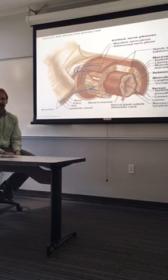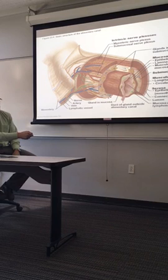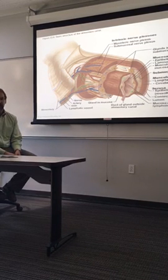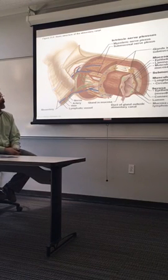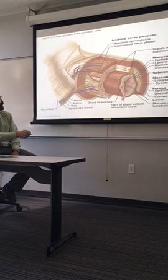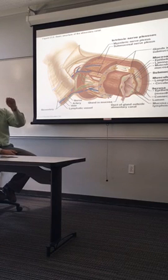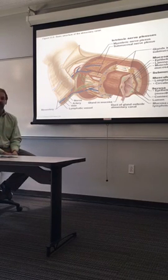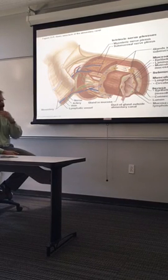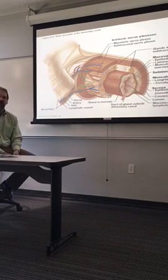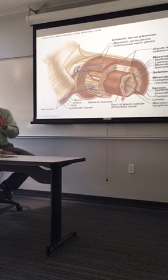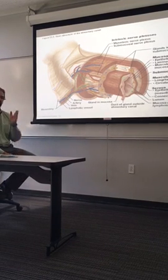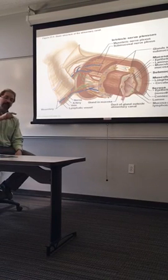Those folds of the plasma membrane of the columnar cell are called microvilli — much smaller than villi. A villus is a protrusion of the mucosa, whereas a microvillus is a fold of the plasma membrane of a single columnar cell. They both serve the same purpose: increasing surface area for absorption. Later in the slides there's an electron micrograph of a single cell where we'll look at microvilli more closely. Villus and microvillus are very different things.